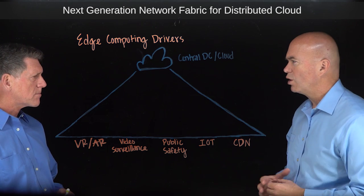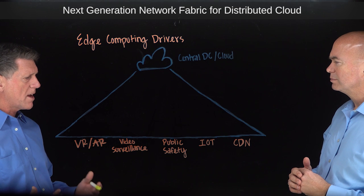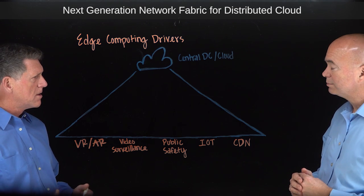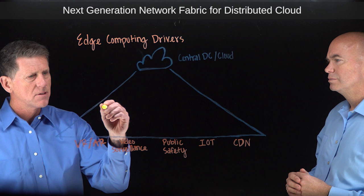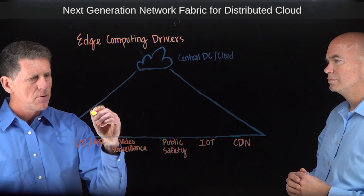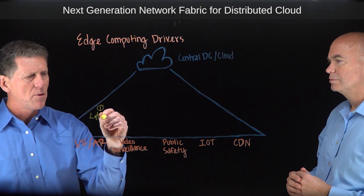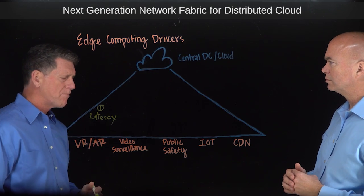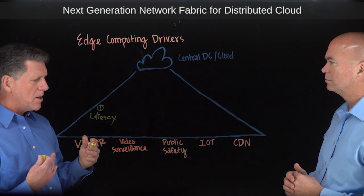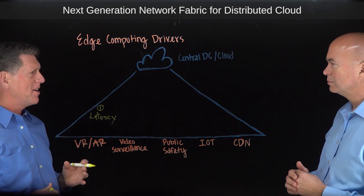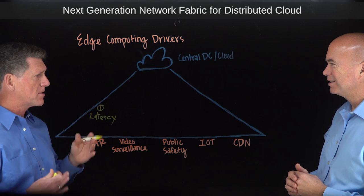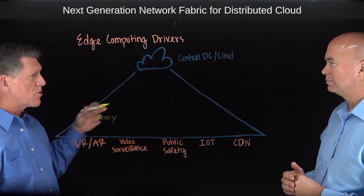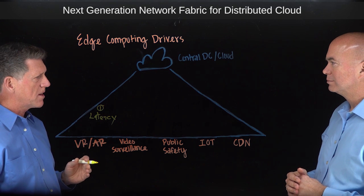What are some of the issues causing that? We kind of categorize it in four buckets. The first one is latency. If you use an example like virtual reality, you can either have all the compute on your head, or you can have a pair of thin glasses with the compute happening in the cloud, which is where things are going. That round trip latency can't exceed 20 milliseconds.